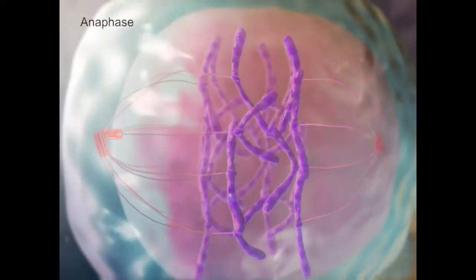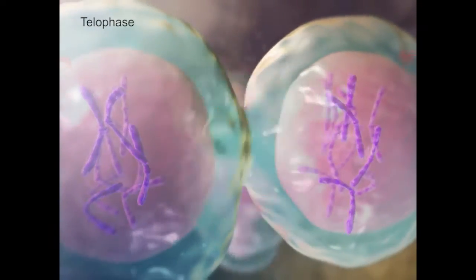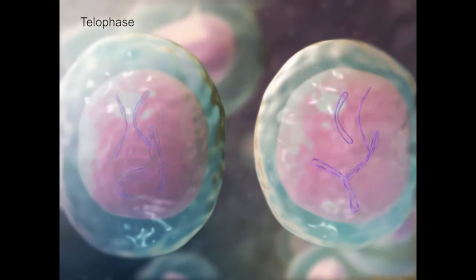A nuclear membrane forms around each of the two identical sets of chromosomes, and eventually the cell cleaves in two, with each daughter cell containing one of the two nuclei.